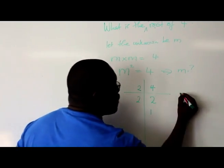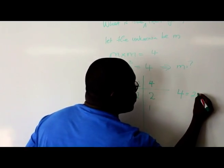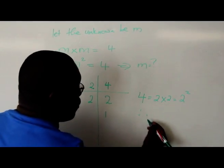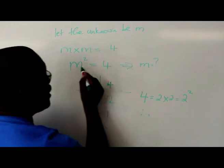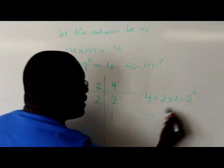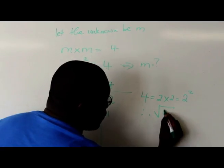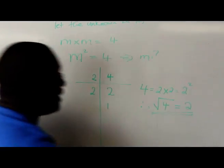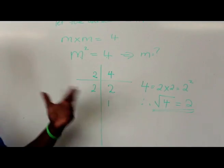In other words, we're saying 4 can be written as 2 times 2, which is the same as saying 2 squared. Therefore, corresponding to our m, we're saying 2 squared is equal to 4. That means that the square root of 4 is equal to 2. That is how you do it when you're using the ladder method.